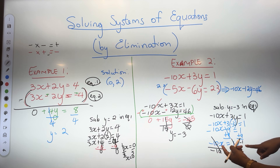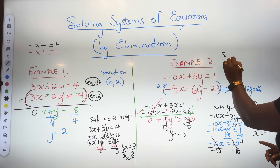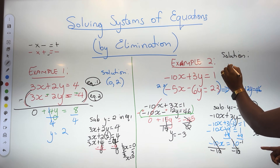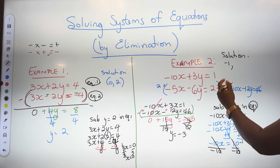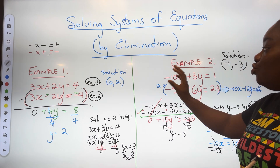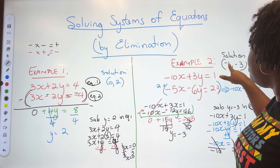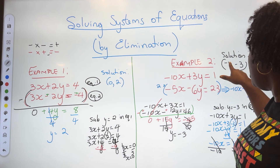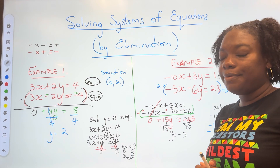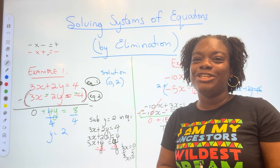So our solution is x equals negative 1 and y equals negative 3. Remember your solution is any pair that makes the equation true — if I plug negative 1 and negative 3 into the equations, they should hold. Thank you for watching, I hope this helped, and I'll see you in the next video.